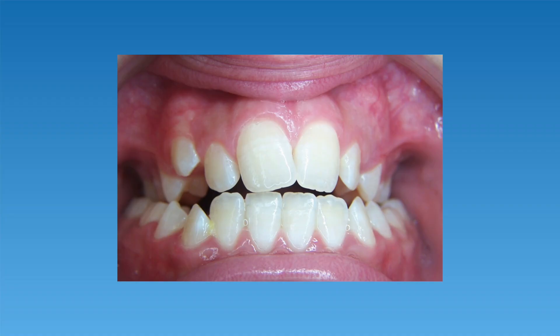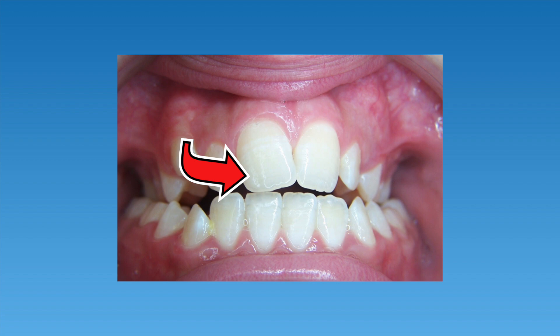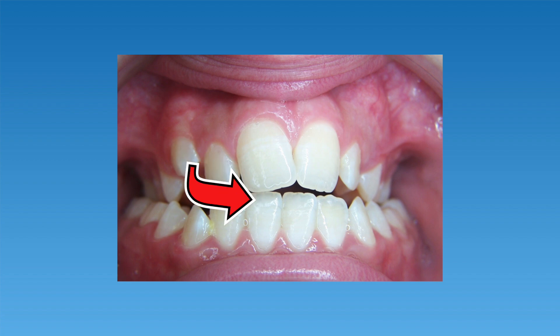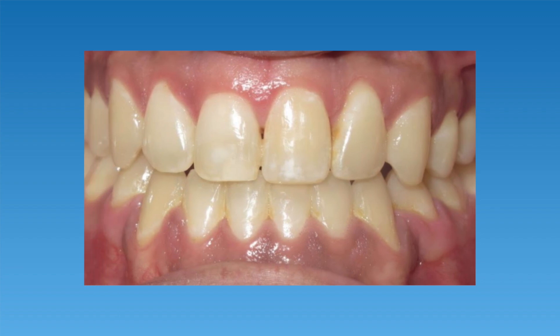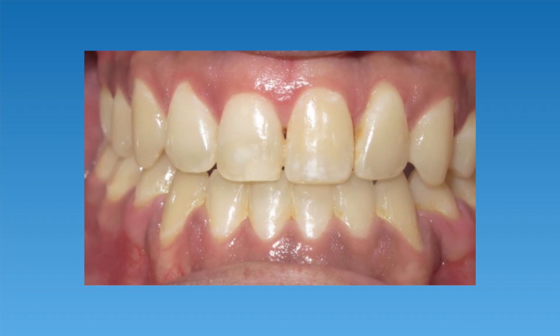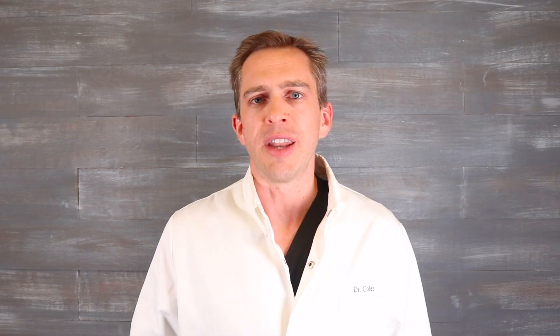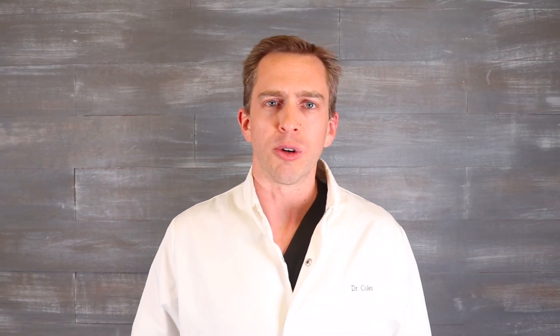In cases of posterior crossbite, upper teeth will be more narrow than the lower teeth. Ideally the upper teeth should be wider than the bottom teeth and should sit outside of the lower teeth. This image here is a good example of how we would want the back teeth to sit. Now let's look at an example of a posterior crossbite where the upper teeth sit inside of the lower teeth.